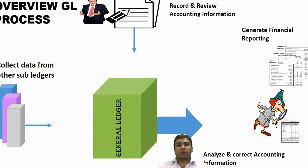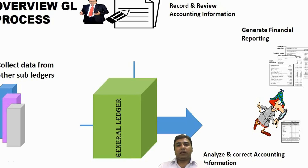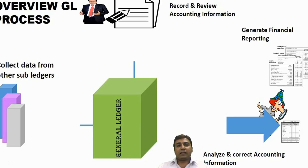Overview of the General Ledger Process: The user reviews and records accounting information. Accounting information can be directly entered in the General Ledger using journal entries, or imported from other sub-ledgers like Accounts Receivable and Accounts Payable. The General Ledger also has the ability to revalue and translate balances nominated in foreign currencies. Using FSG (Financial Statement Generators), the General Ledger can produce financial statements like the income statement and balance sheet.